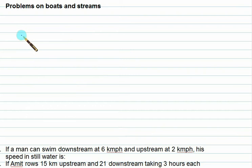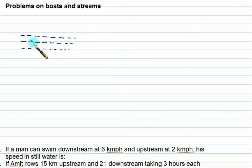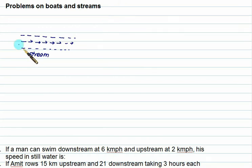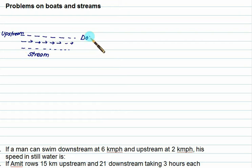The water is flowing in this direction, which represents the velocity vector of the stream. This is called the stream. If you are on this side it is called upstream, and if you are on this side it is called downstream. Stream means velocity of water.